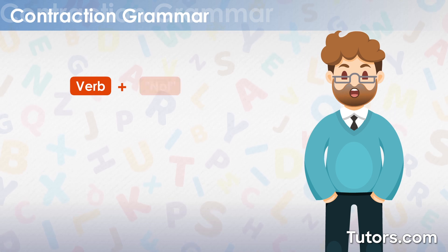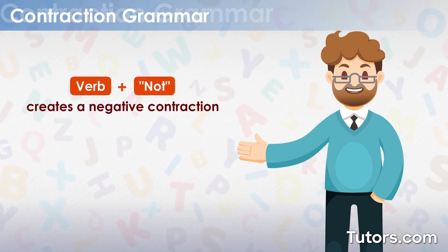Combining a verb with the word not creates a negative contraction, such as do not becoming don't.